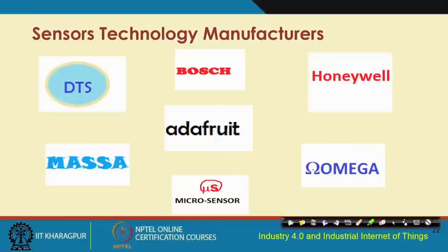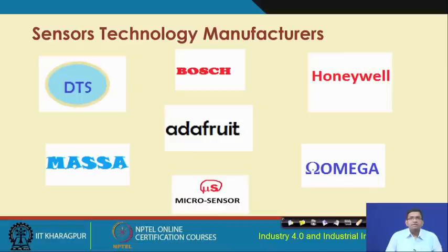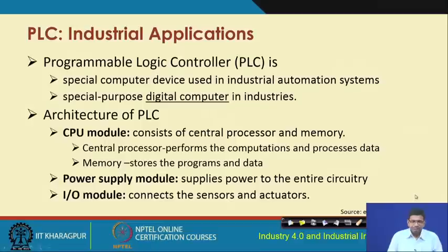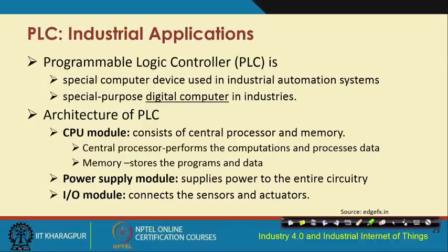There are different sensor manufacturers who develop different types of sensors - Bosch, Honeywell, Omega, and many others globally that produce different types of sensors. When we talk about sensing, at the same time we also need to talk about actuation, and in industry actuation is very important. Use of PLCs is very important to serve actuation platforms. PLC stands for programmable logic controller, and these programmable logic controllers are special-purpose digital computers with special capabilities for automating industrial processes and industrial machinery.